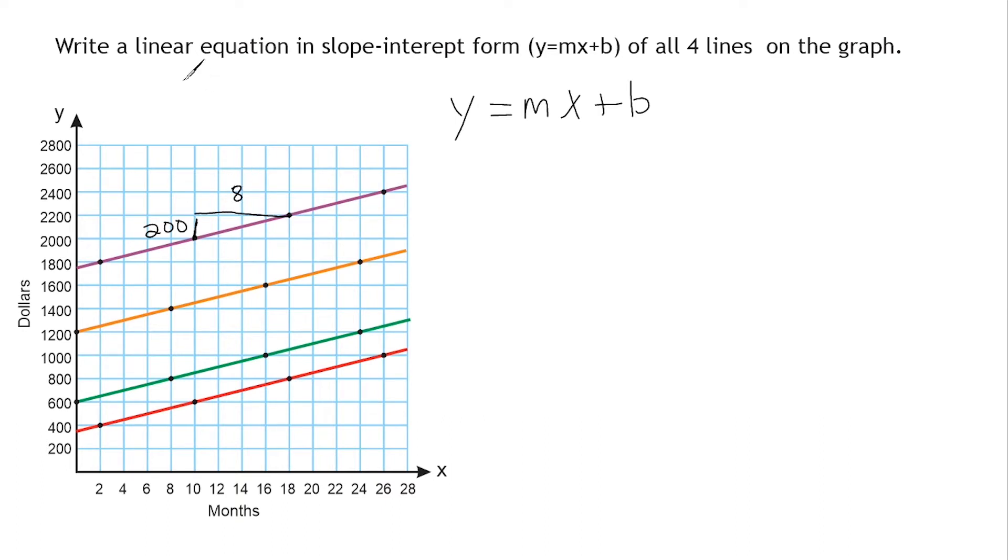So what we have to do now is take that rise over run, or change in y of 200 over the change in x of 8, and we have to simplify that. So we're going to take 200 and divide that by 8, and that ends up giving us 25.